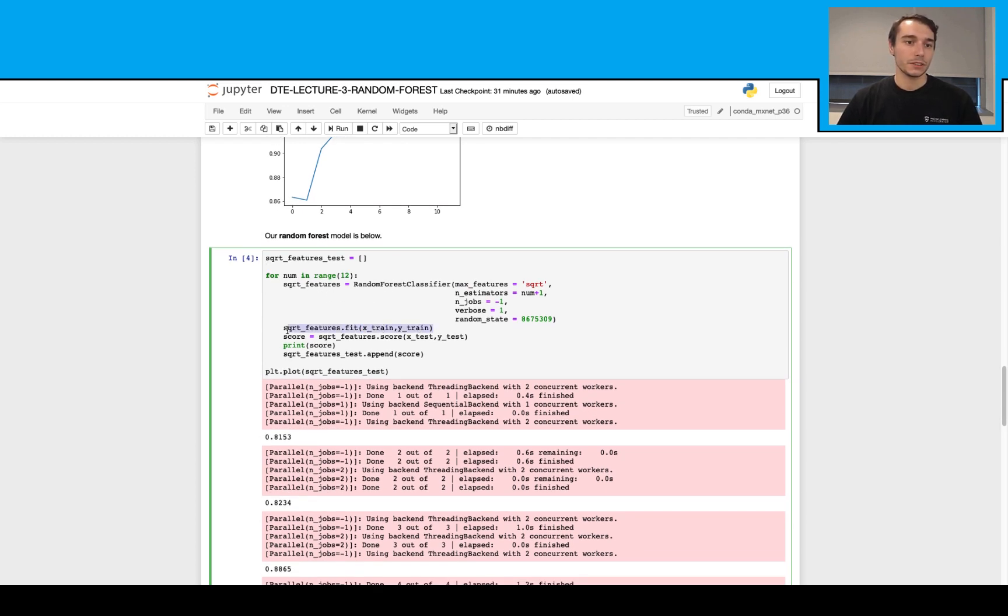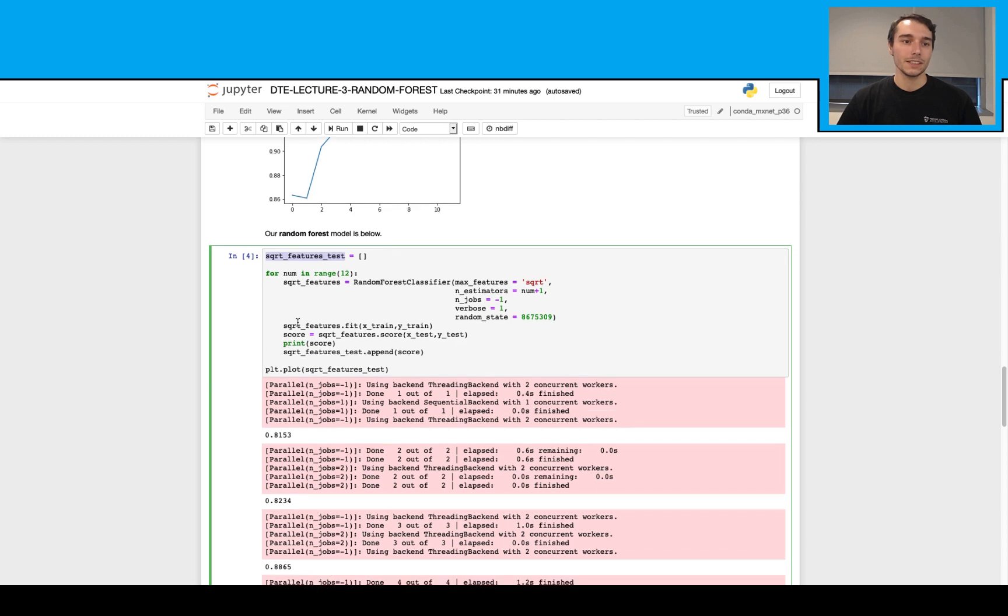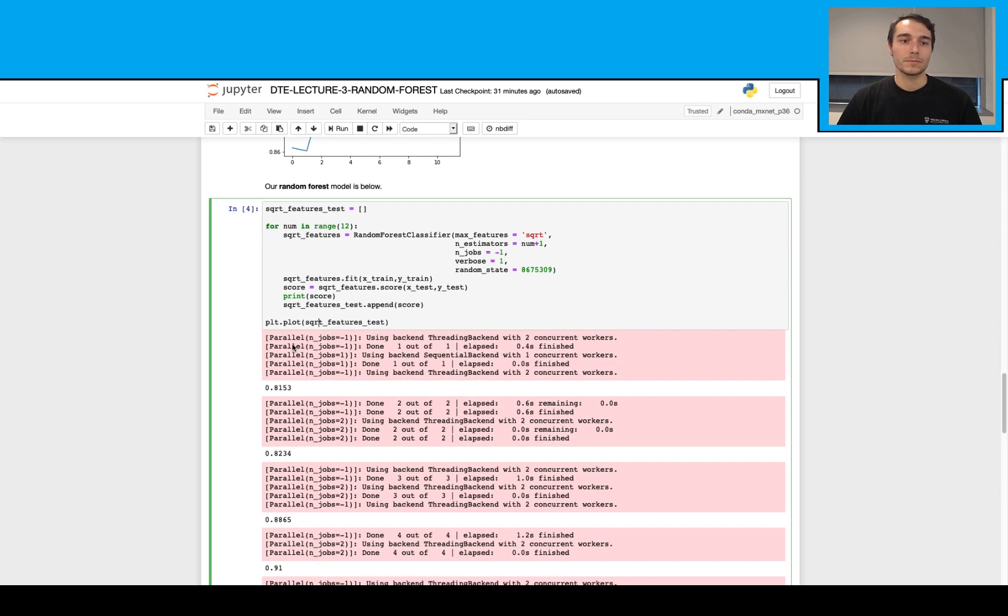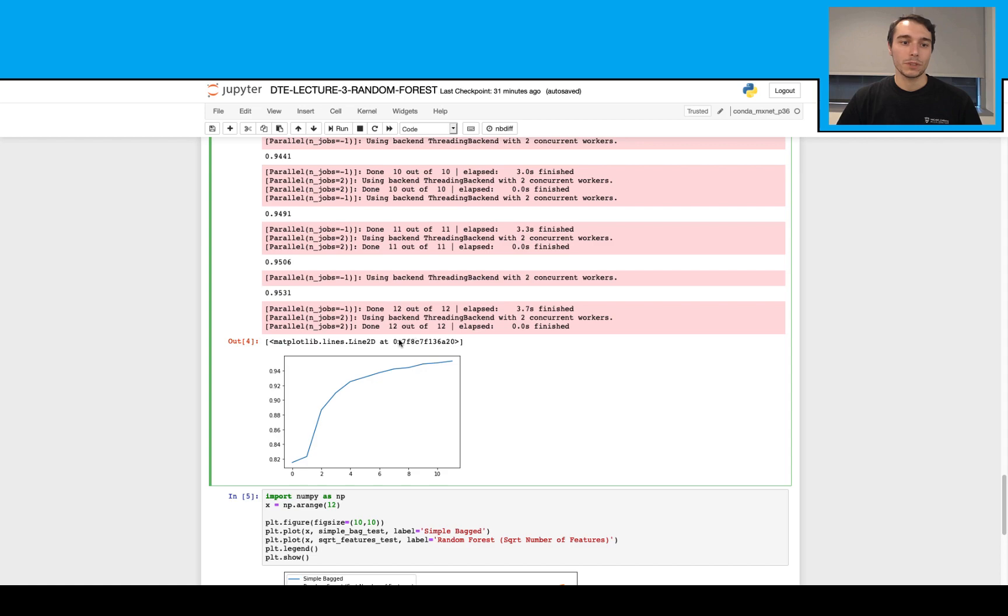Then I will again fit it on my training data. Then I will get my predictions from the test data like this. Similar to before, I will also keep this inside a list. Then I will just append it. And at the end, after this training, I will also plot my result.